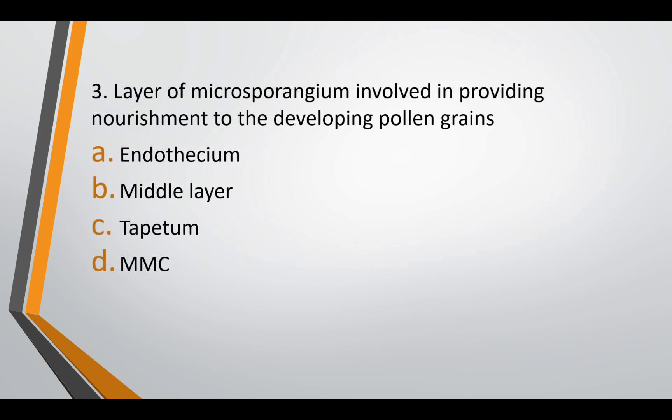Question three: the layer of microsporangium involved in providing nourishment to the developing pollen grains is — option A: endothecium, option B: middle layer, option C: tapetum, or option D: MMC. The correct answer is option C — tapetum provides nourishment to the developing pollen grain.